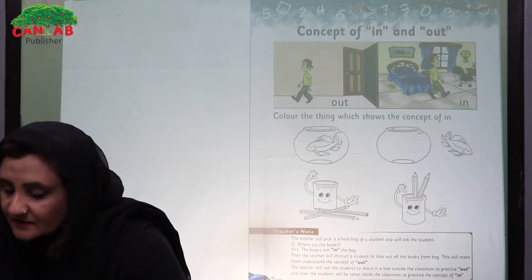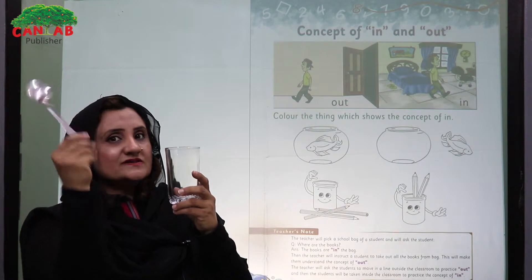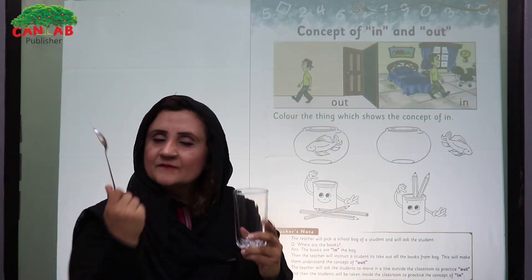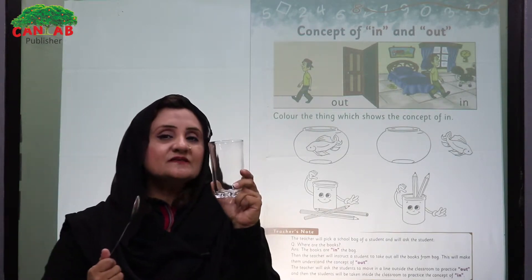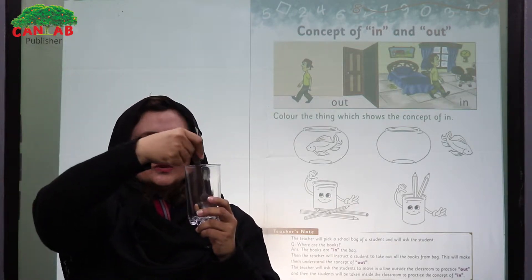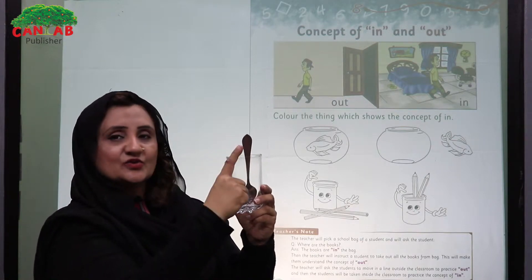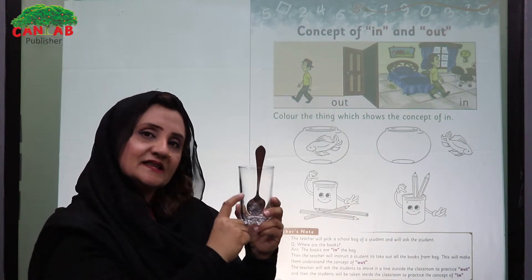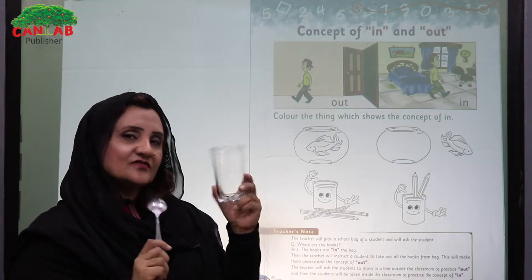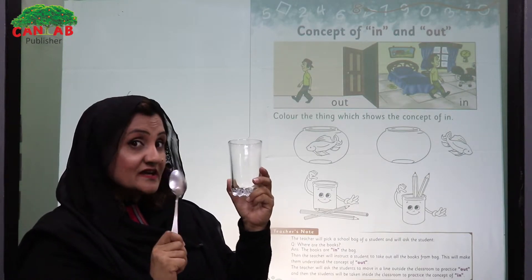After this we will show them a spoon and a glass. Student, what is this? This is a spoon, and what is this? This is a glass. Now where is the spoon? The spoon is in the glass. And now the spoon is out of the glass.